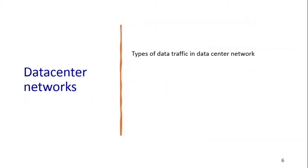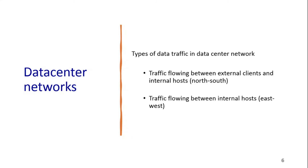In data centers there are two types of data traffic. The first is traffic flowing between external clients and internal hosts, which is called north-to-south traffic. The second type is traffic flowing between internal hosts, where hosts communicate and coordinate with each other — this is called east-west traffic.